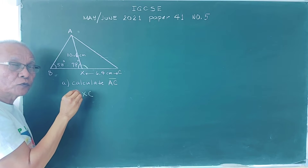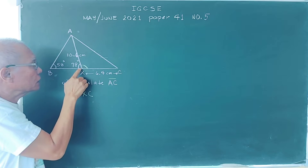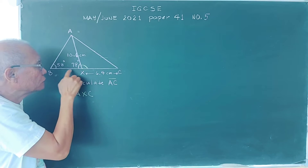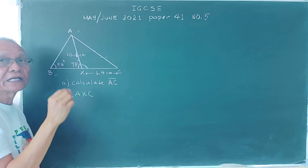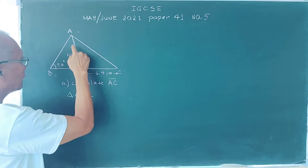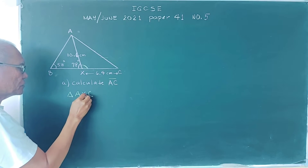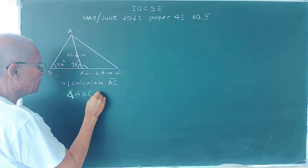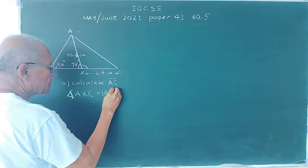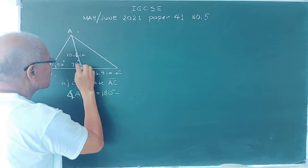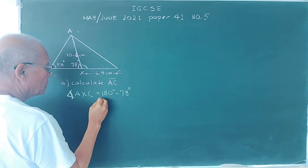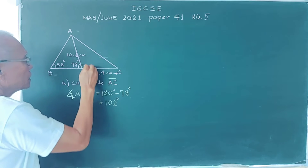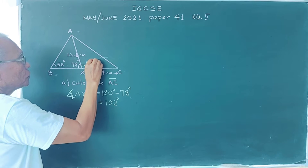The problem is that the included angle is unknown. However, angle AXC and the given angle AXB of 78 degrees form a linear pair, lying on one straight line. Since a straight line is always 180 degrees, angle AXC equals 180 minus 78 degrees, which gives us angle AXC equal to 102 degrees.